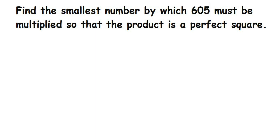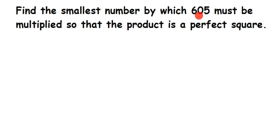Hey everyone, this is a question from squares and square roots. The question is: find the smallest number by which 605 must be multiplied so that the product is a perfect square. They are saying that 605 is not a perfect square and we have to make it a perfect square by multiplying with the smallest possible number.